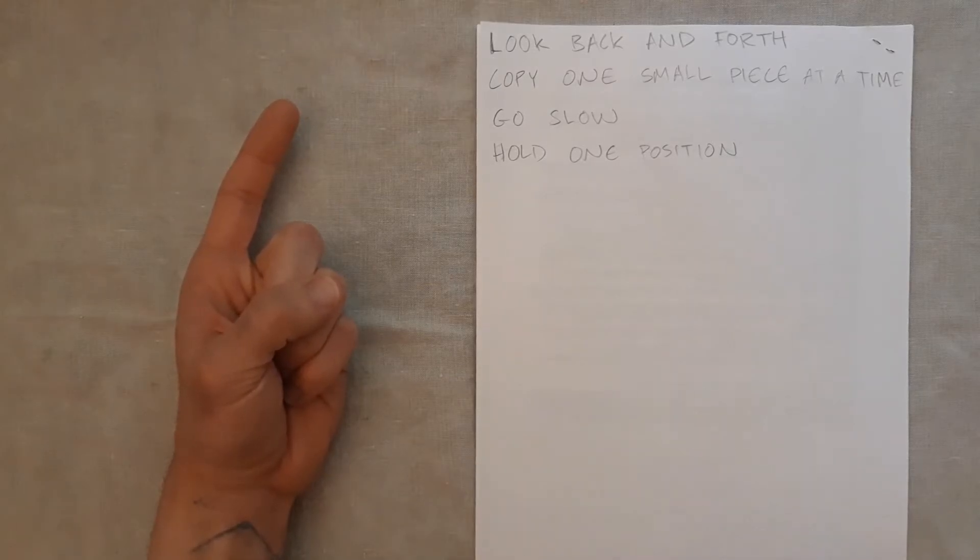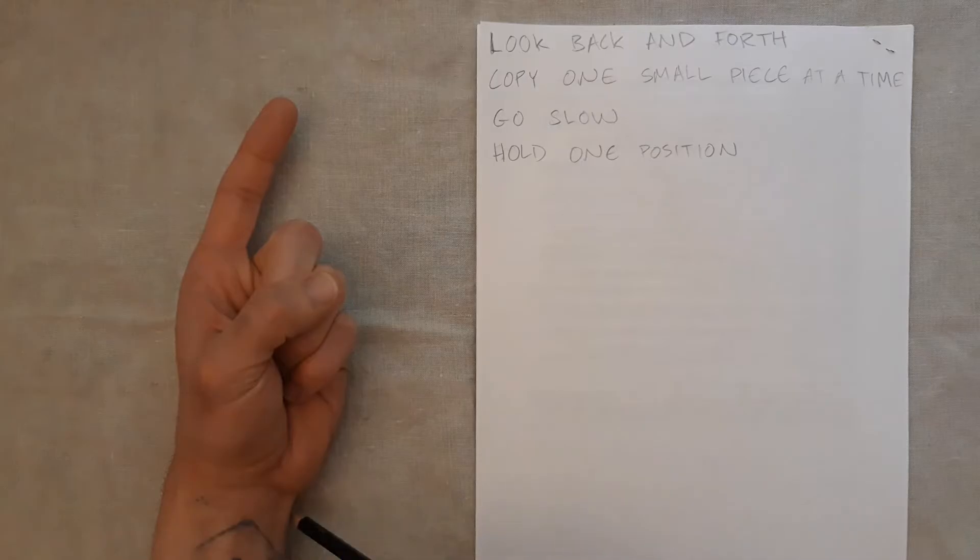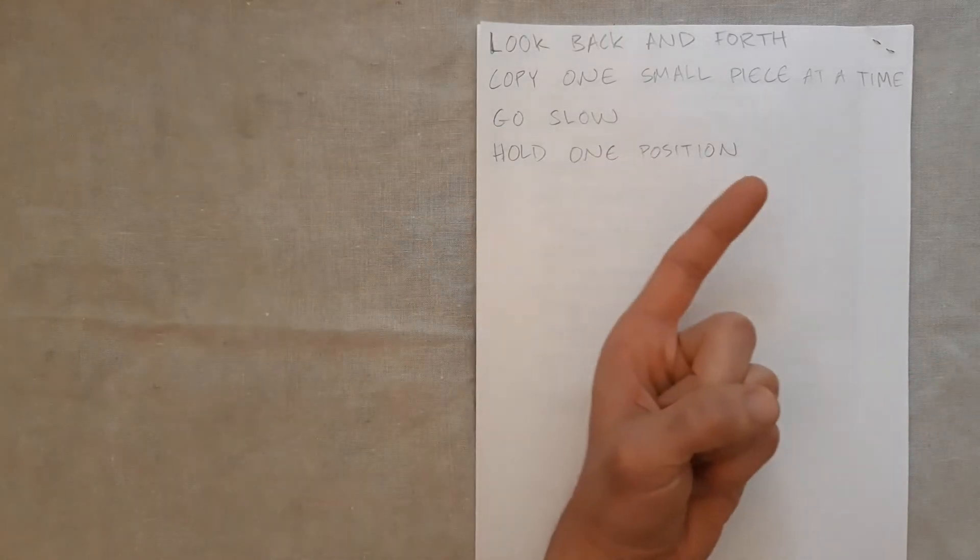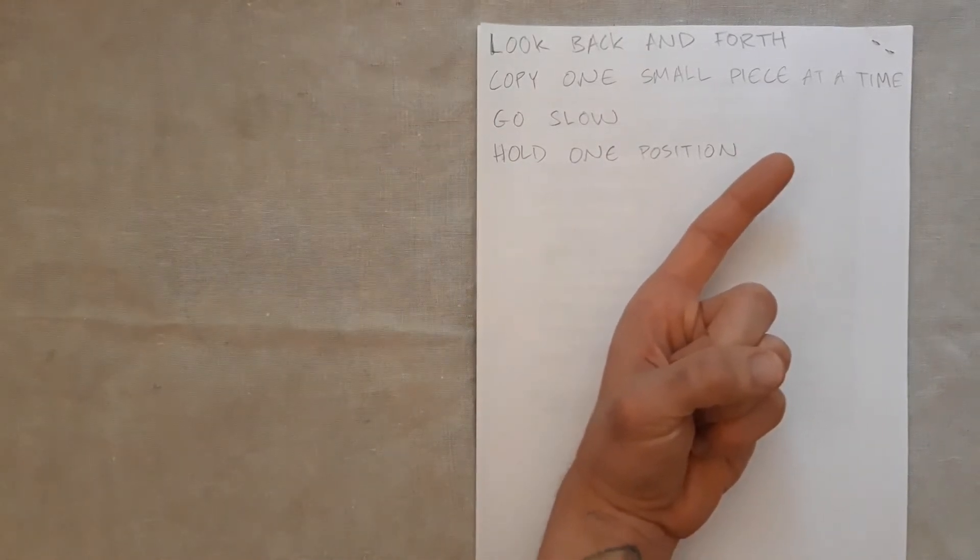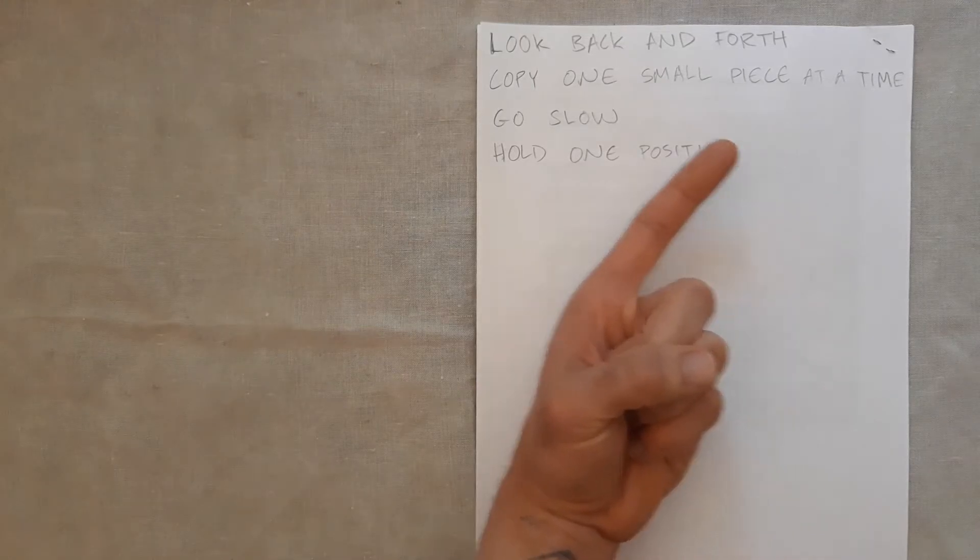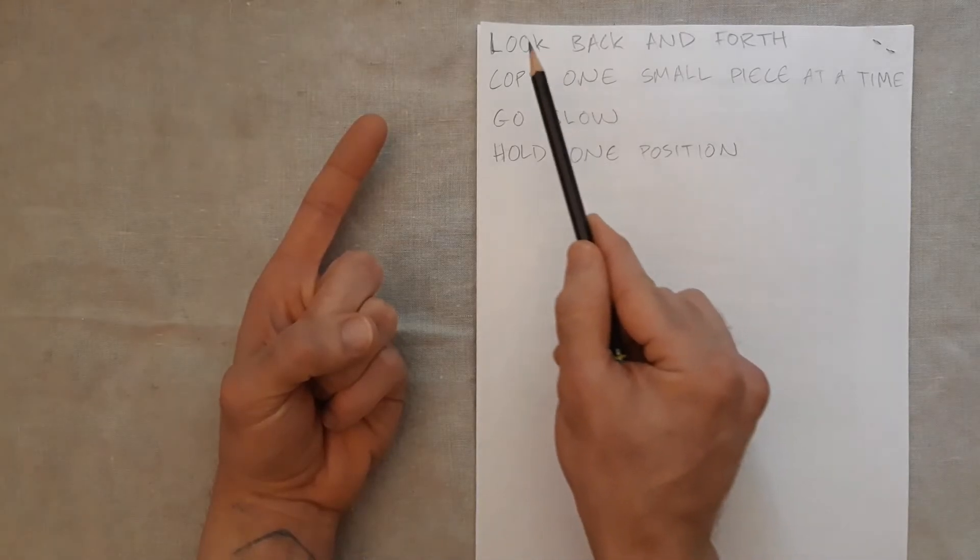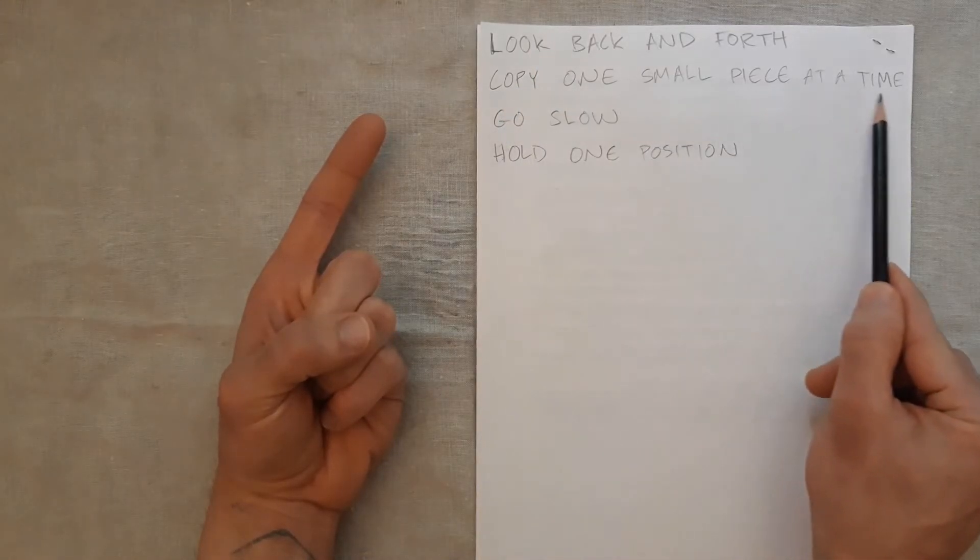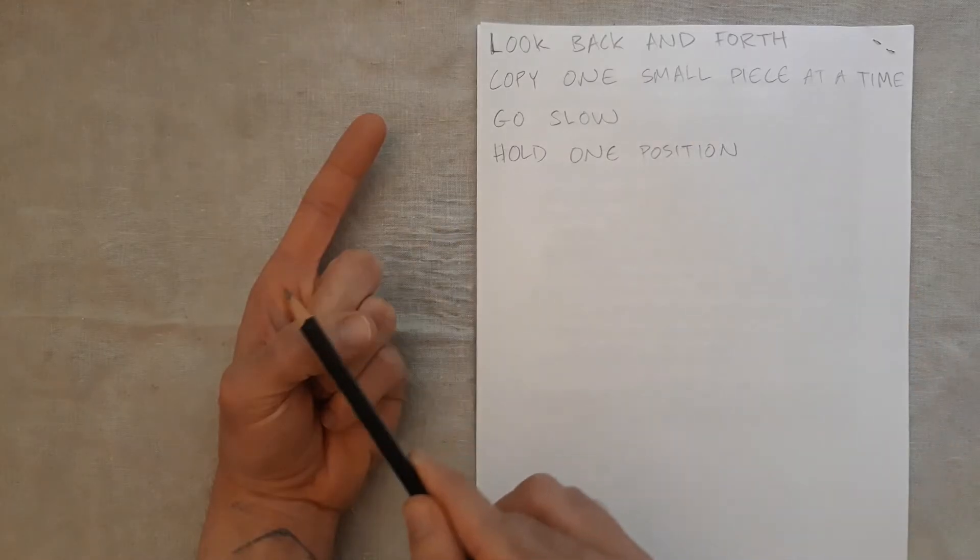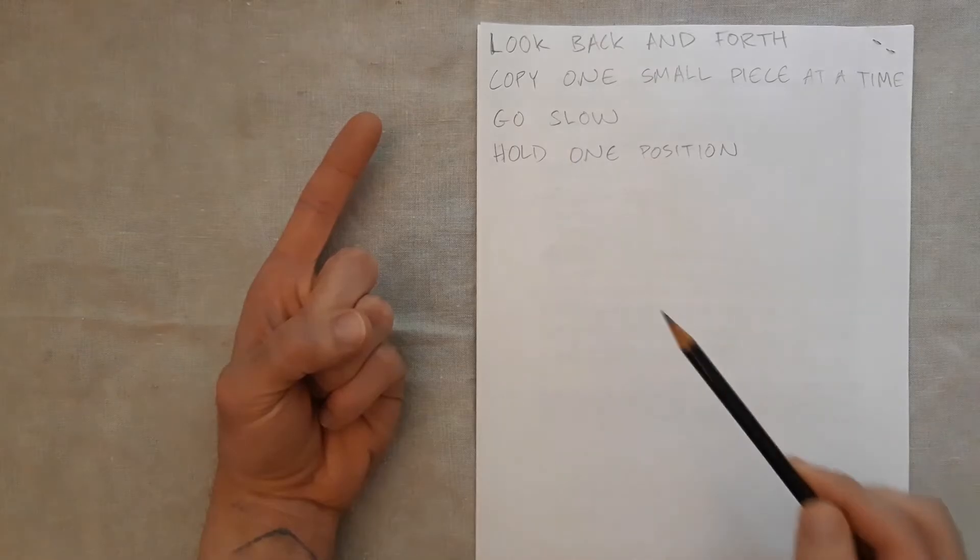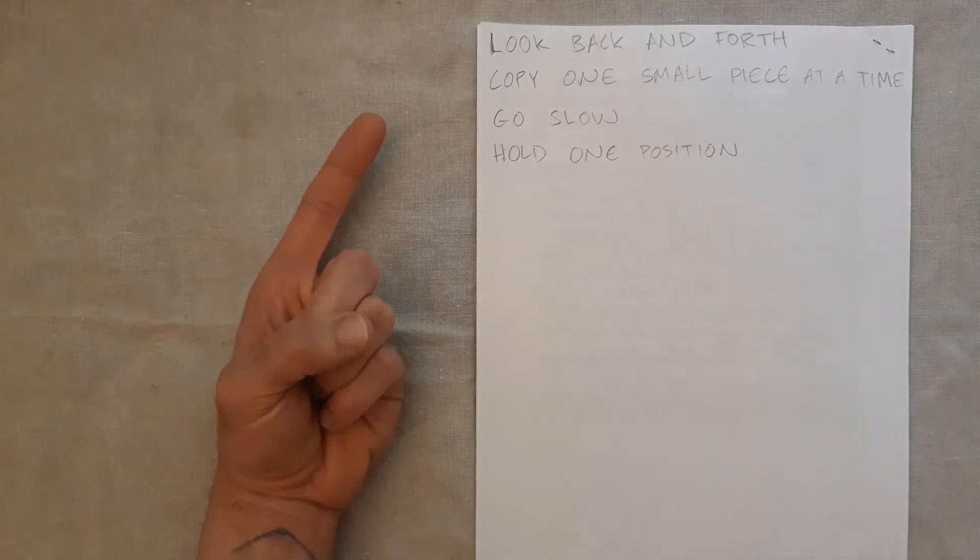Now you need to choose one part to start with. I like to start down at the wrist. What we want when we're done is about a life size hand on the paper. But we're not tracing our hand. We want to look at one little piece at a time, copying one small piece at a time. Looking back and forth from our hand to our drawing, going slowly and trying to complete the whole hand in one position.